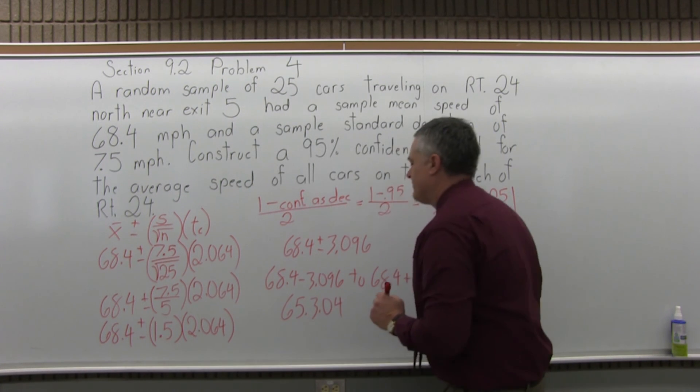So the low end of the interval will come from 68.4 minus 3.096 to the upper end of the confidence interval will be 68.4 plus 3.096. So, on the smaller end, when I do 68.4 minus 3.096, that comes out to 65.304. And when I do the upper end, 68.4 plus 3.096, that will be 71.496.